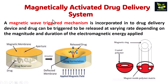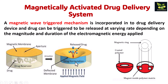Next is the magnetically activated delivery system. A magnetic wave triggered mechanism is incorporated into the drug delivery device. The drug can be triggered to be released at varying rates depending on the magnitude and duration of electromagnetic energy applied. You can see in the diagram: applied magnetic field, drug formulation, and the drug release site.